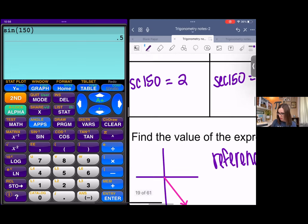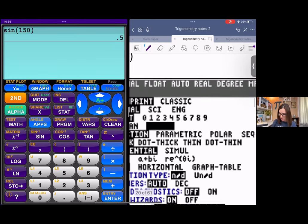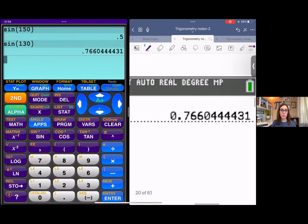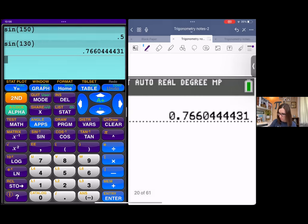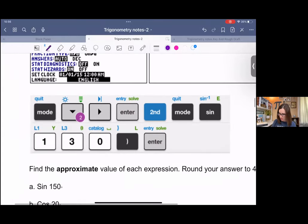And down here, the example I have is sine of 130. So just type in sine 130. Whoops, not one. There you go. Like that. And there's the decimal approximation.